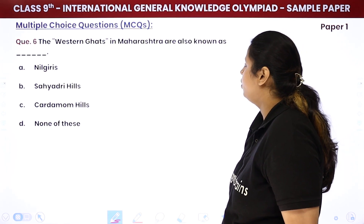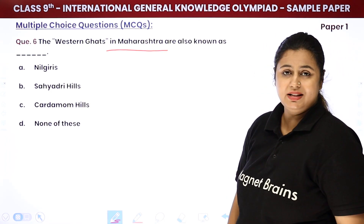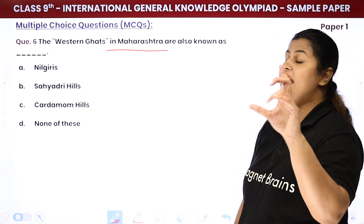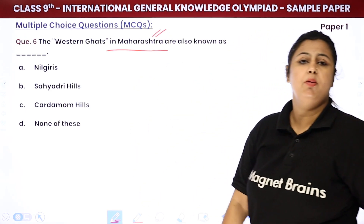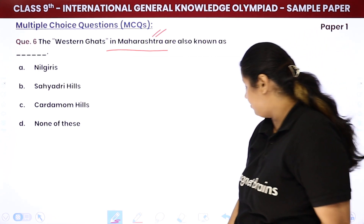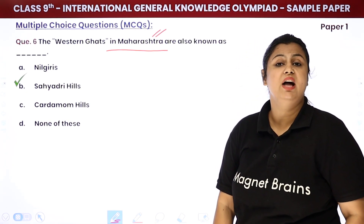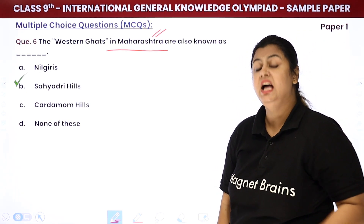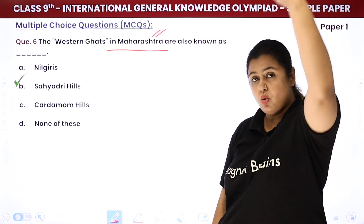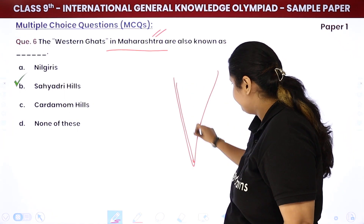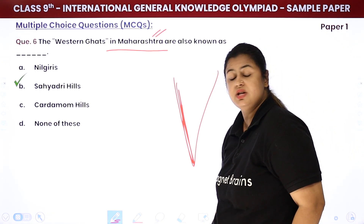The Western Ghats in Maharashtra are also known as Sahyadri Hills. Other names include Neelgiri and Tardamum Hills — there are different names in different areas. Because it is denoted here, Sahyadri Hills is the name used in Maharashtra for the Western Ghats. The Western Ghats are a very big hub for Flora, Fauna, and Biodiversity. It is a UNESCO World Heritage Site and is approximately 1,600 km long along the coastal plain.